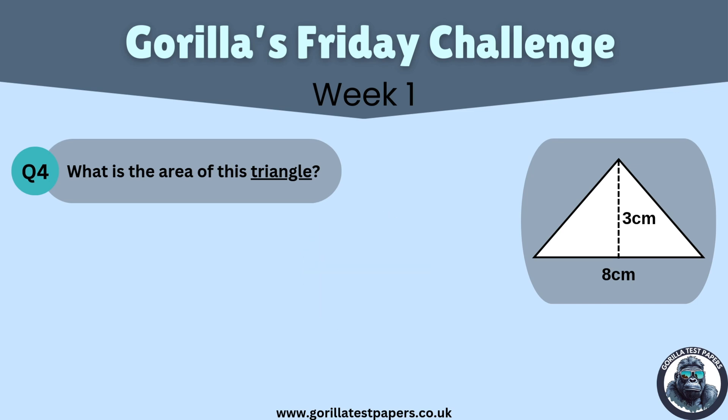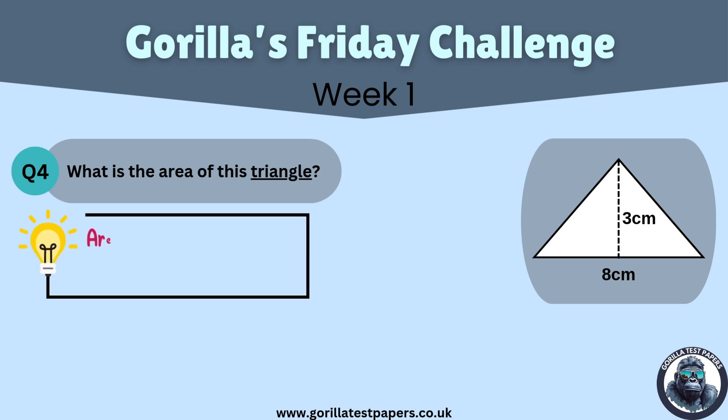First, we need to know how to calculate the area of a triangle — this will be the second top tip of the week. To calculate the area of a triangle, the equation is: area equals half base multiplied by height, also abbreviated as shown.